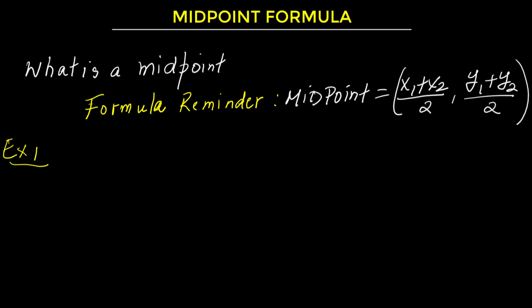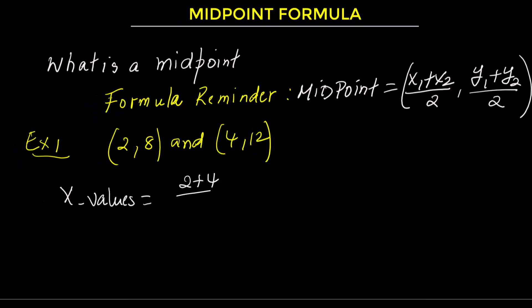Let's find the midpoint between the points (2, 8) and (4, 12). Start with the x values. Add 2 plus 4, that gives you 6. Divide 6 by 2, you get 3. Now for the y values. Add 8 plus 12, that's 20. Divide 20 by 2, you get 10. So the midpoint is (3, 10).